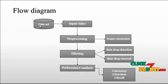Then filtering process. In the filtering process, there are two methods applied: one is raindrop detection and another one is raindrop removal. And then finally, performance analysis. In the performance analysis process, we are calculating accuracy, precision and recall of the process.